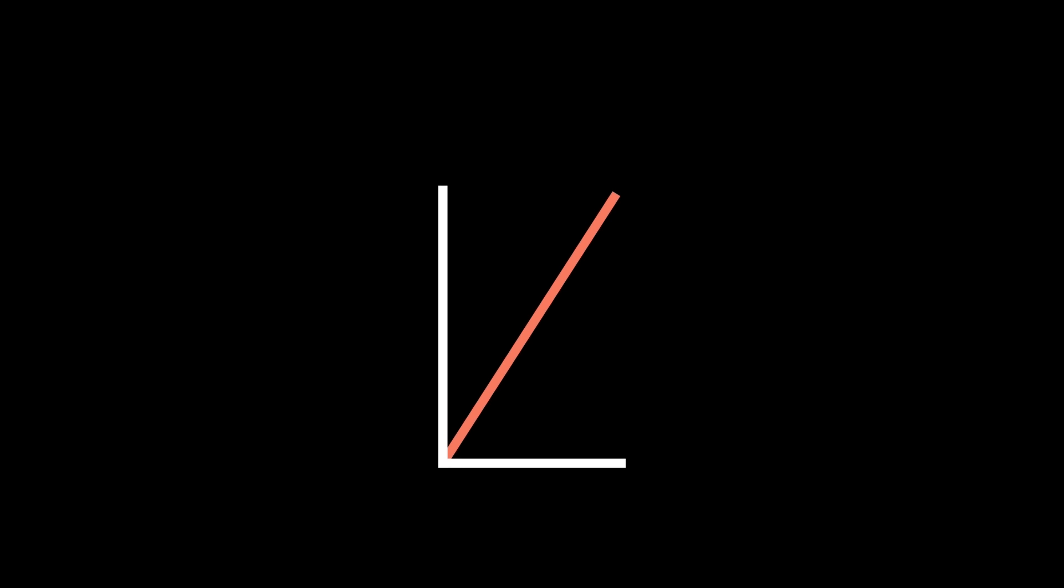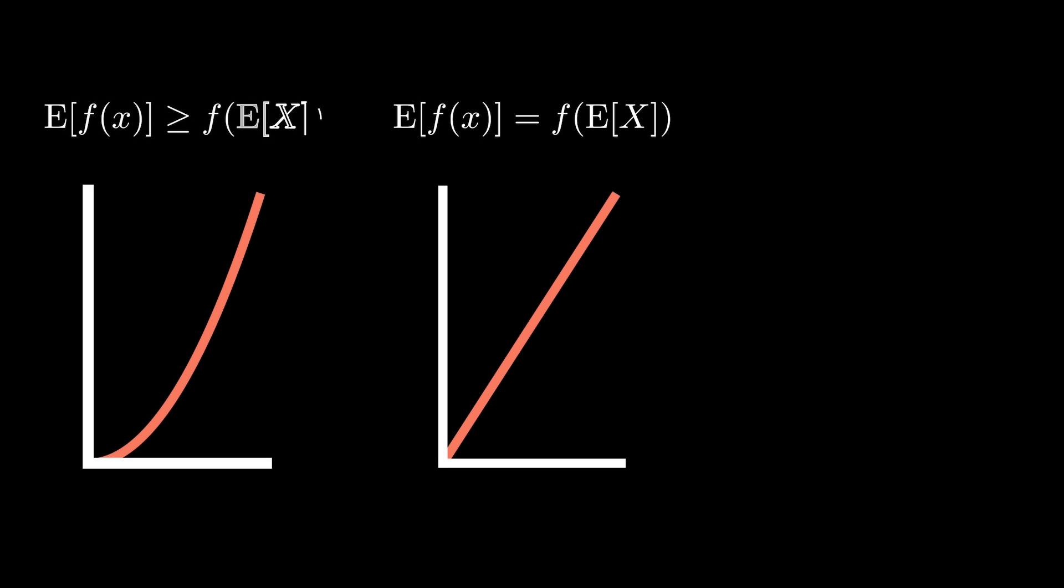So in summary, when we deal with linear systems, the flaw of averages does not exist. Using an average input and feeding it into our model or function will yield an average output. However, in most situations, our models or systems are non-linear. If our function is convex, our expected model output should be greater than what we observe if we feed our expected input value into our model. And conversely, if our function is concave, our expected model output will generally be less than what we observe if we feed our expected input value in our model. And if you can remember this, you'll have a pretty good sense of whether your modeling application is subject to the flaw of averages.